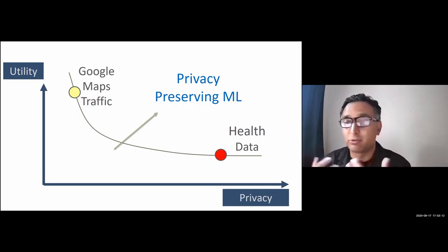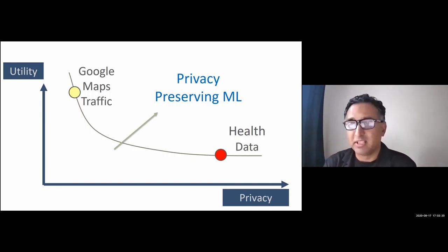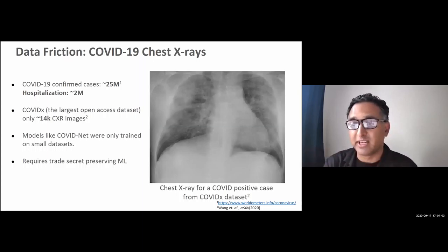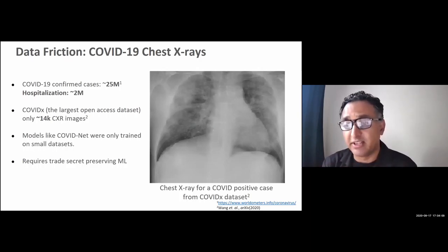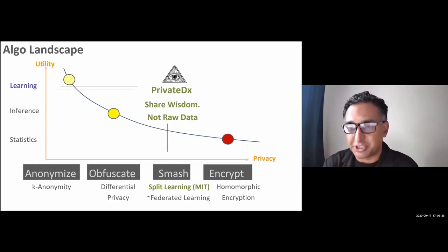Would there be an equivalent of Google Maps for our health data? If you could have a bird's-eye view into everything going on, you could probably solve some of the most important health problems overnight. The goal for privacy-preserving machine learning is to have both privacy and utility. For example, if we had 2 million COVID-19 hospitalizations with everyone's chest X-rays, we could quickly figure out what care a person needs — but the best chest X-ray dataset out there only has 14,000 images.